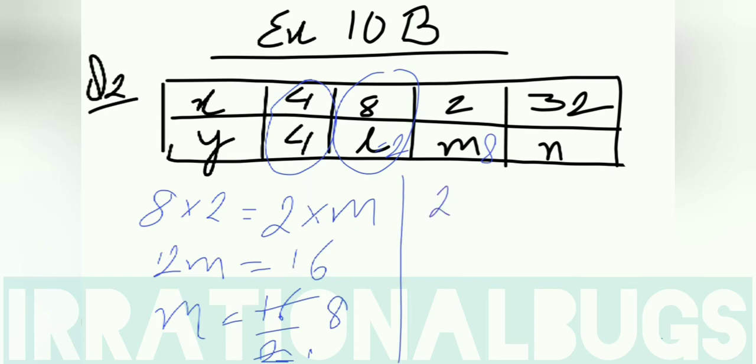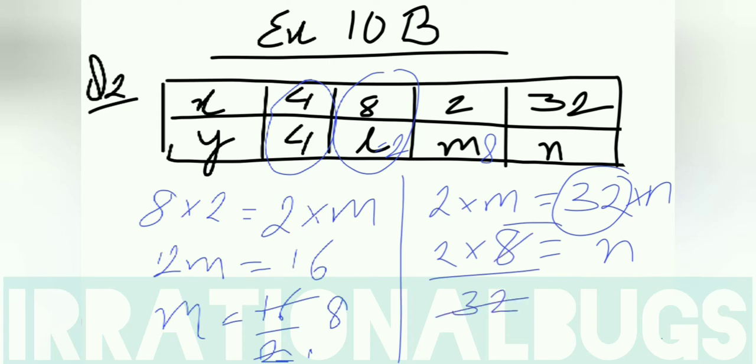Next we start with 32 into n. We start with last 2 only. 2m is equal to 32 into n. m is equal to 8. I put 2 into 8 upon 32 is equal to n. 8 and 32 are cancelled. 2 into 4, the answer is half.